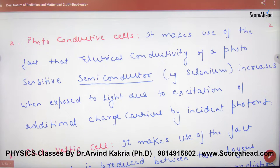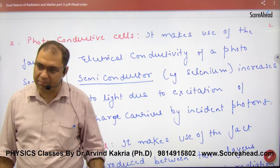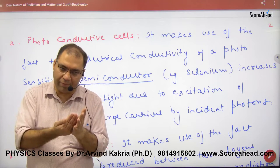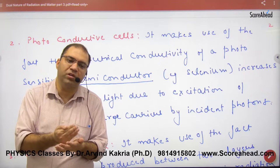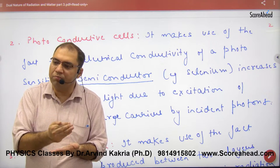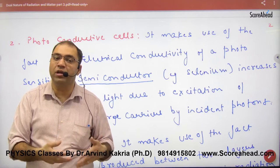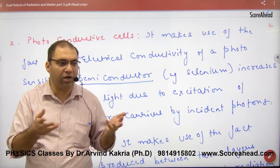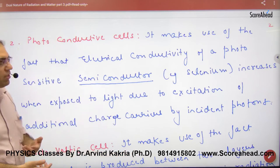The photoconductive cell makes use of semiconductors. A semiconductor is taken and photons fall on it. The temperature increases in the semiconductor, causing many free electrons to be released. As more free electrons are released by light radiation, the current increases. The conductivity of the semiconductor increases as temperature increases — this is the principle used in this cell.